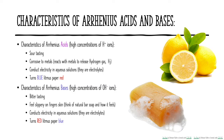Litmus paper comes in two different colors — blue or red. If you start with a piece of blue litmus paper and touch it to an acid, it will turn red. If you start with a piece of red litmus paper and touch it to an acid, it's going to stay red. It won't change.